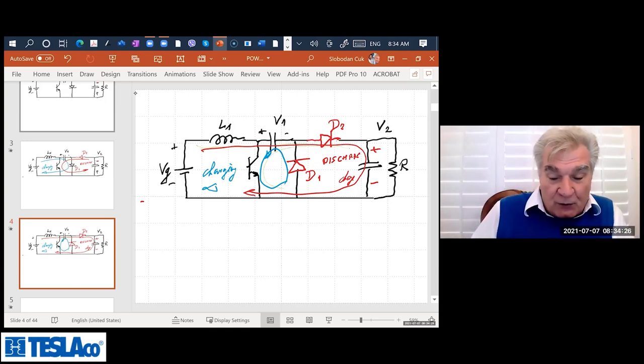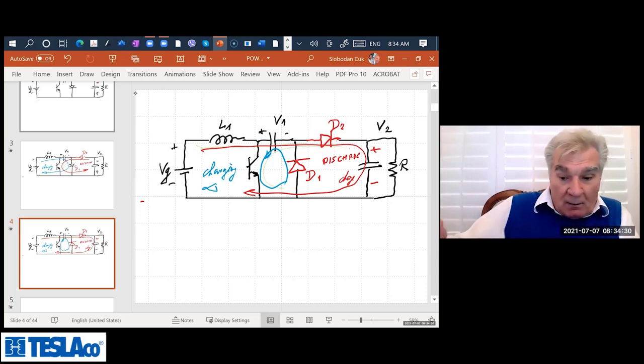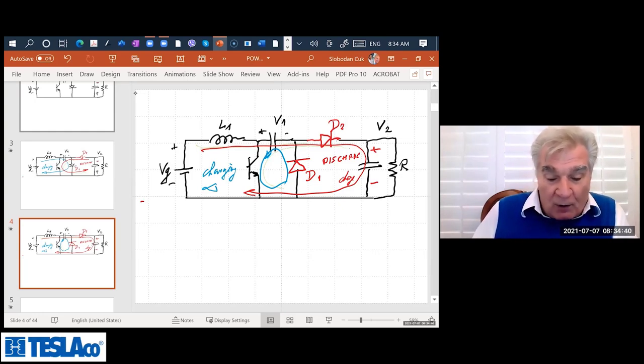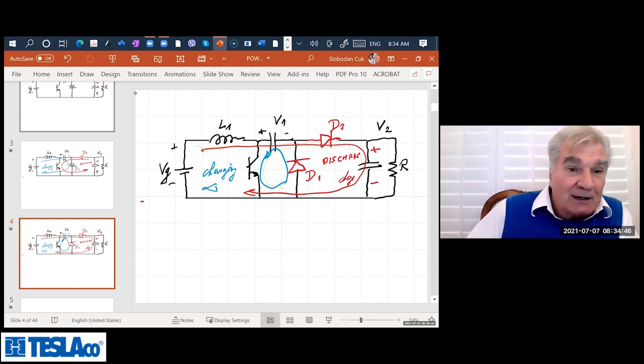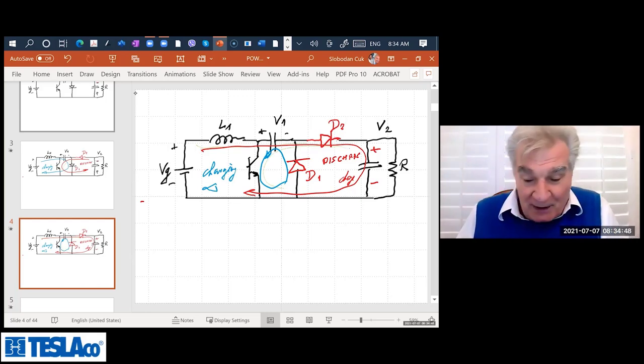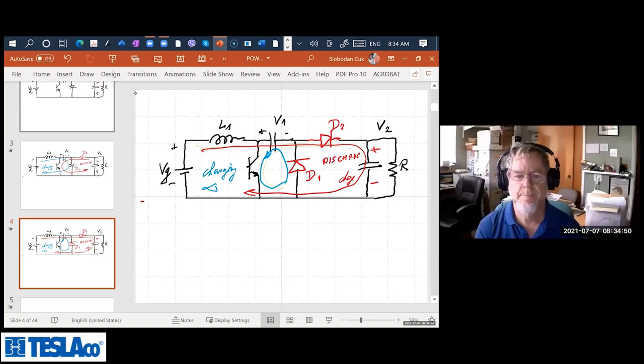But at least this was good. The single converter, positive input, can generate positive output and negative output. Great. Just change the direction. Or actually, you don't have to change the direction. What you do is just put the, remember, when you change the direction, you have a common ground. But if you don't change the direction, you just put a ground on the negative side. That's all, right? But anyway, I showed you how you have polarity inversion in a single converter.